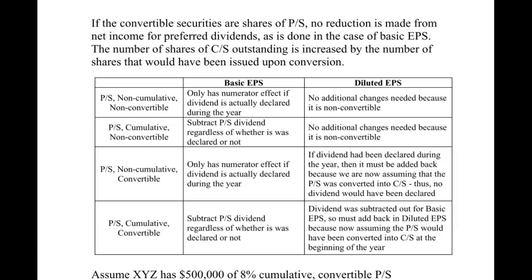So at the top of the convertible securities chart — for shares of preferred stock, no reduction is made from net income for dividends in dilutive, because remember we've already subtracted them in basic earnings per share. I've got this chart here and I'm not going to read through everything, so if you need to pause it and look through this for a second, that's fine. It helps keep everything straight, especially when you're doing homework and studying.